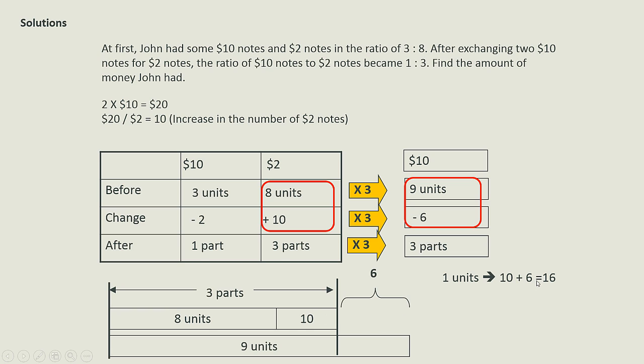And to find the amount of money that John had, I can use the amount as before. Because since this is a change, the total amount stays the same.